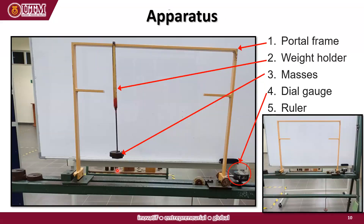In order to conduct the experiment, these are the apparatus we are going to use: the portal frame, the weight hanger, masses — this is a 2 newton load — the dial gauge, and a ruler to measure the dimensions of the frame.